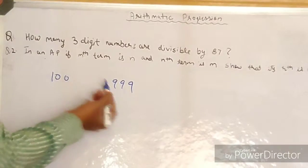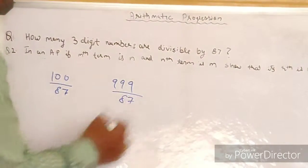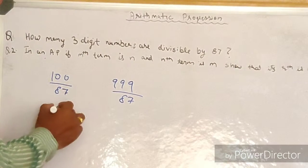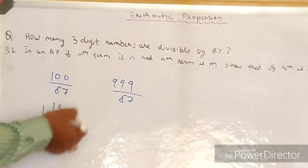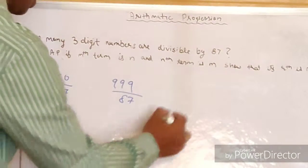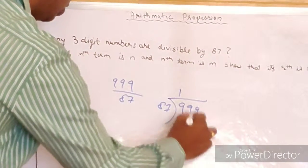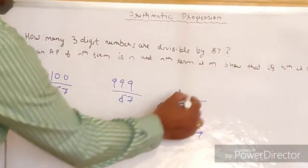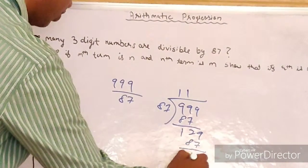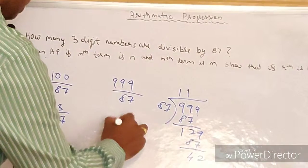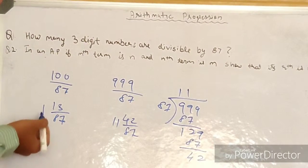Between 100 and 999, only the multiples of 87 should be present. To find the least three-digit number divisible by 87, we divide 100 by 87 and express it as a mixed fraction. 100 divided by 87 gives 1 remainder 13, so the mixed fraction is 1 and 13/87. Similarly, dividing 999 by 87 gives 11 remainder 42, so the mixed fraction is 11 and 42/87.